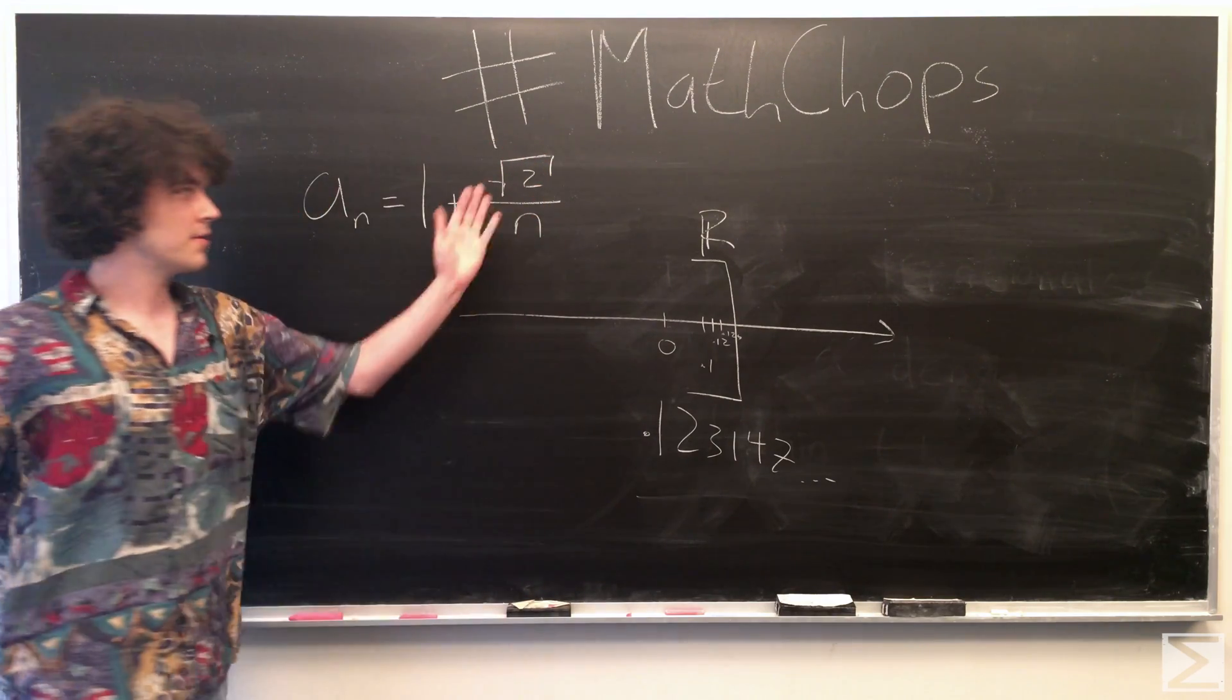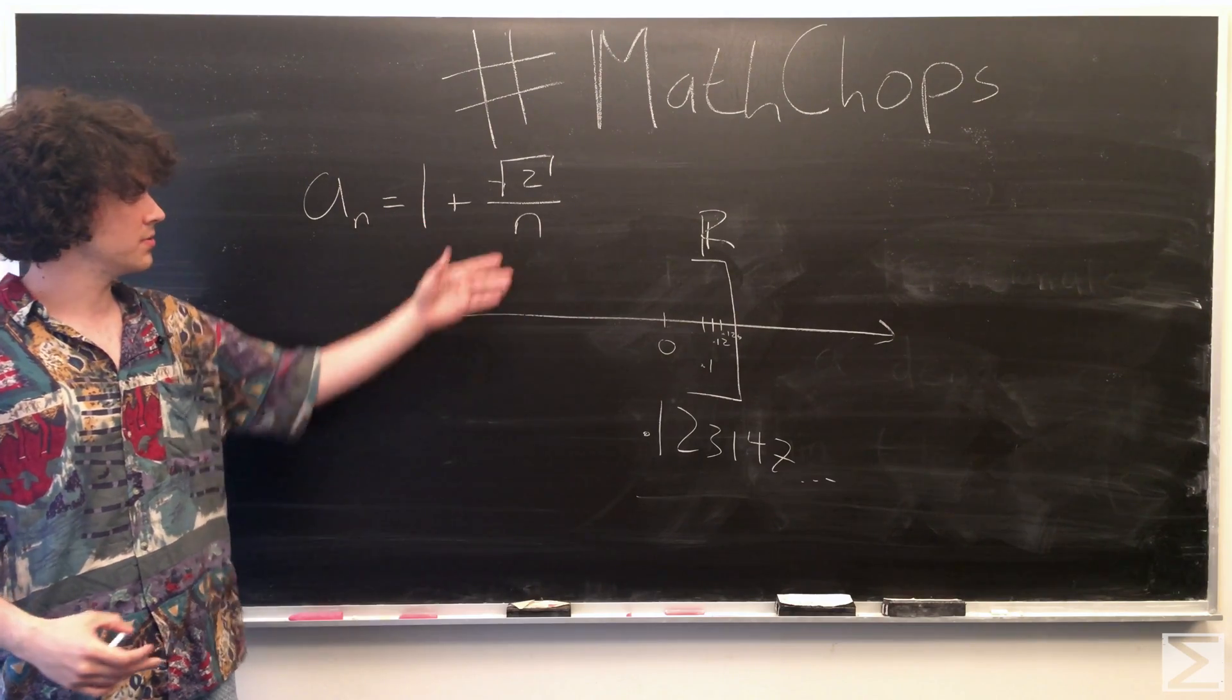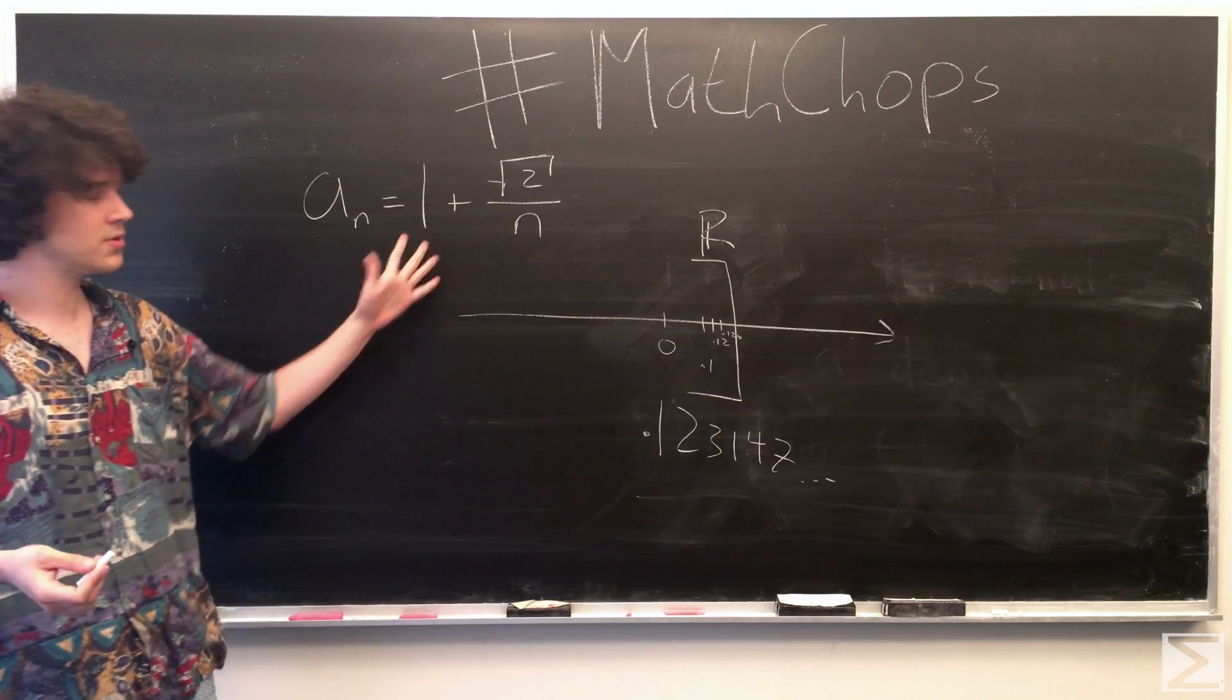But using our favorite irrational number, root 2, we have this sequence, 1 plus root 2 over n, which will, the limit point of which is 1.